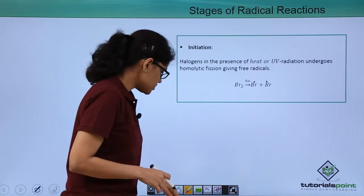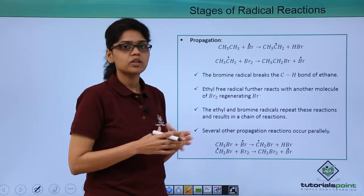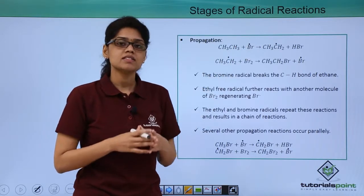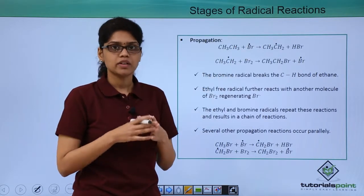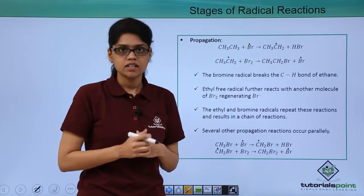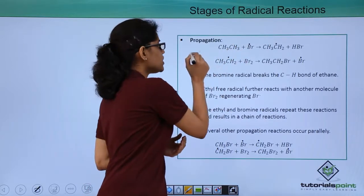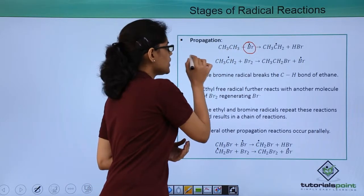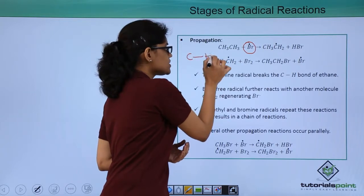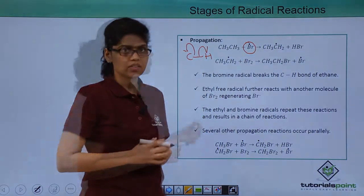The second step is propagation. In the propagating step, these are the two reactions that take place. Let's take ethane as a starting molecule. Br dot has already been generated in the initiation step. When ethane reacts with Br dot, this free radical essentially breaks the CH bond homolytically such that two other free radicals are generated.